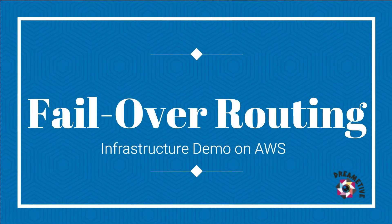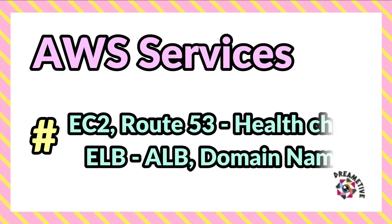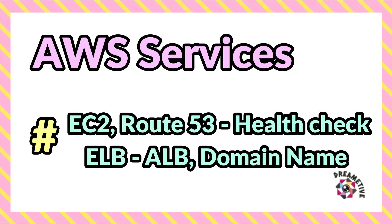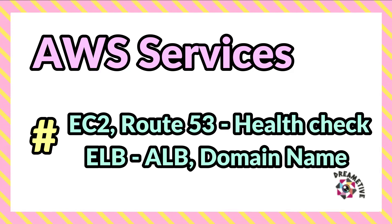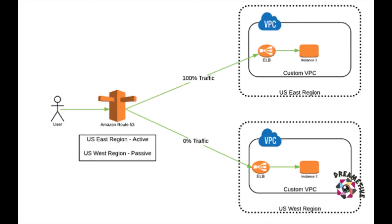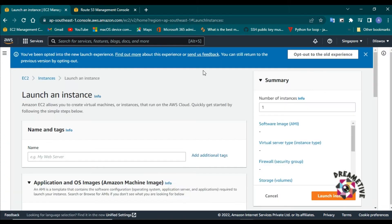Hello there! I'm Ashperia and welcome to Dreamitreative channel. On today's video I will explain you about failover routing concept and also take you through a complete demonstration on AWS platform. Failover routing policy is used to create an active-passive setup such that one site is active and serves all the traffic, whereas the other site — the disaster recovery site — remains on standby. Route 53 monitors the health of the primary site using health checks.